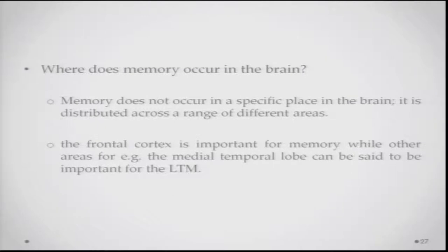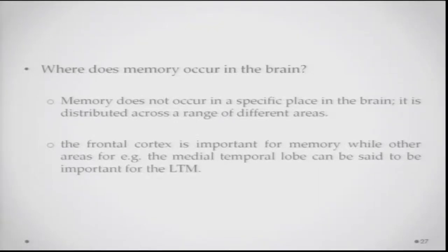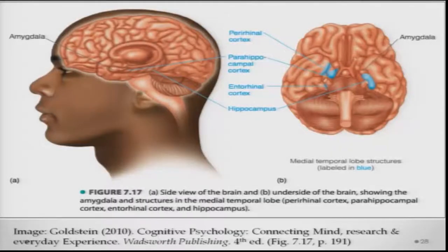Where does memory occur in the brain? Memory does not really occur in one specific site — it is distributed across a range of different areas. The frontal cortex is important for memory, and the medial temporal lobe is also important. Structures including the perirhinal cortex, the parahippocampal cortex, the entorhinal cortex, the hippocampus, and the amygdala are considered very important as far as memory is concerned.